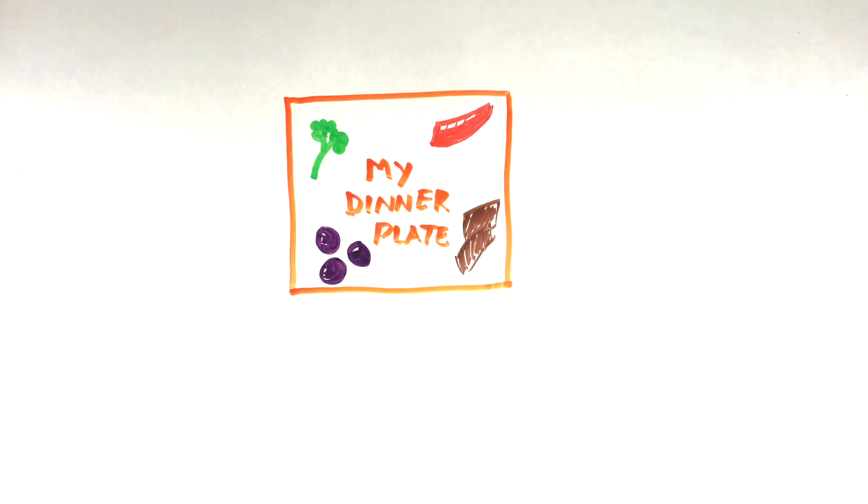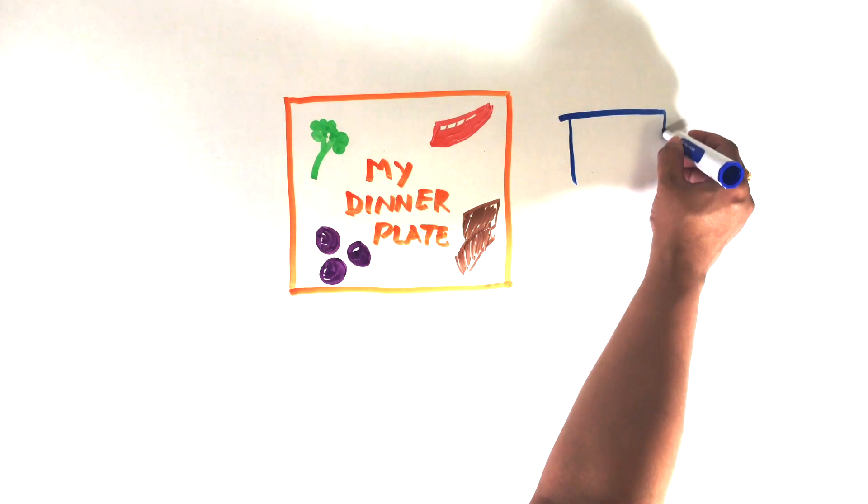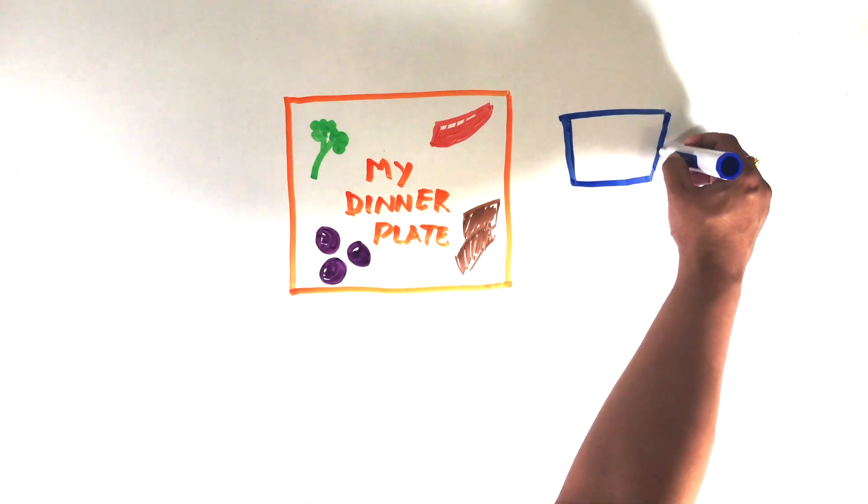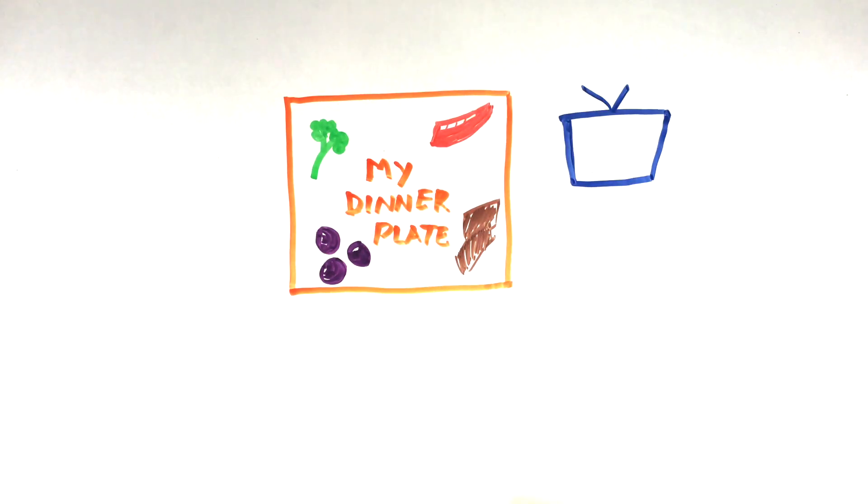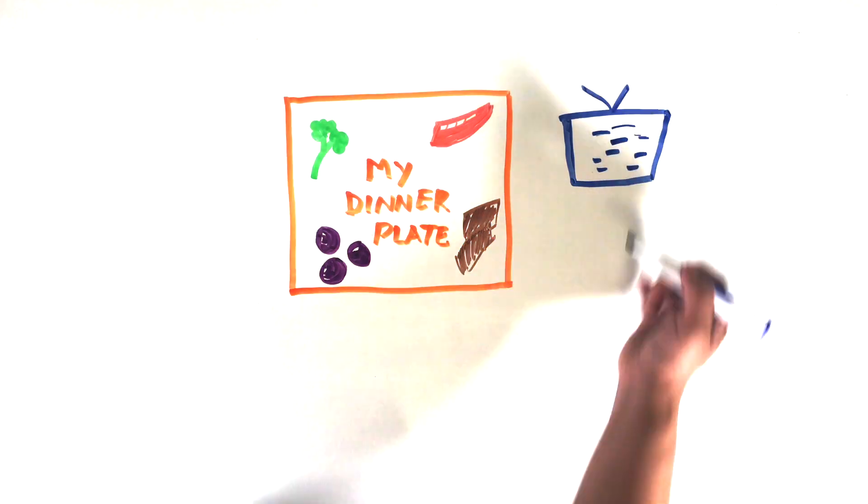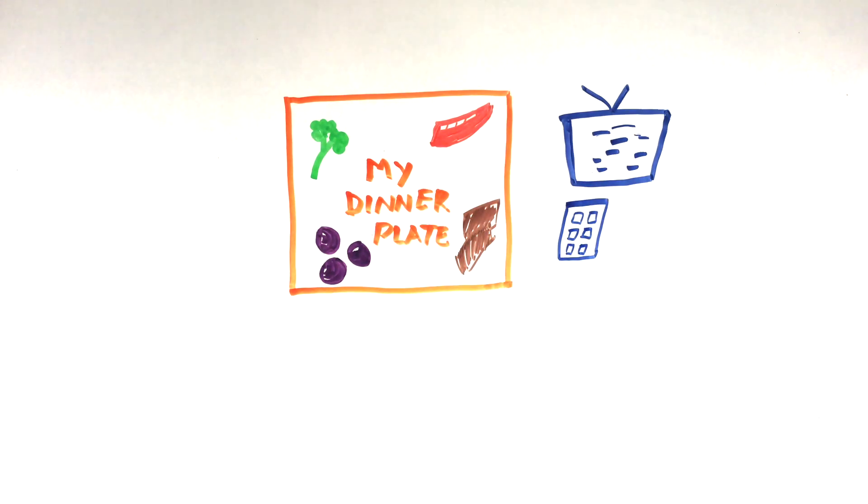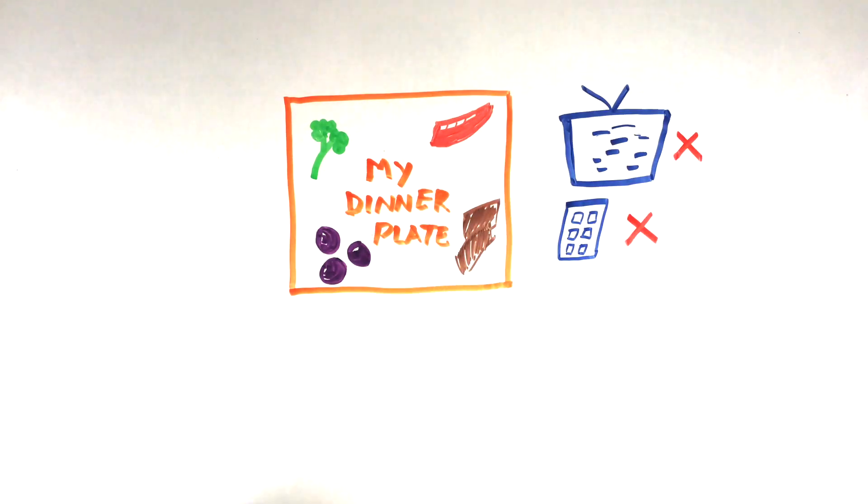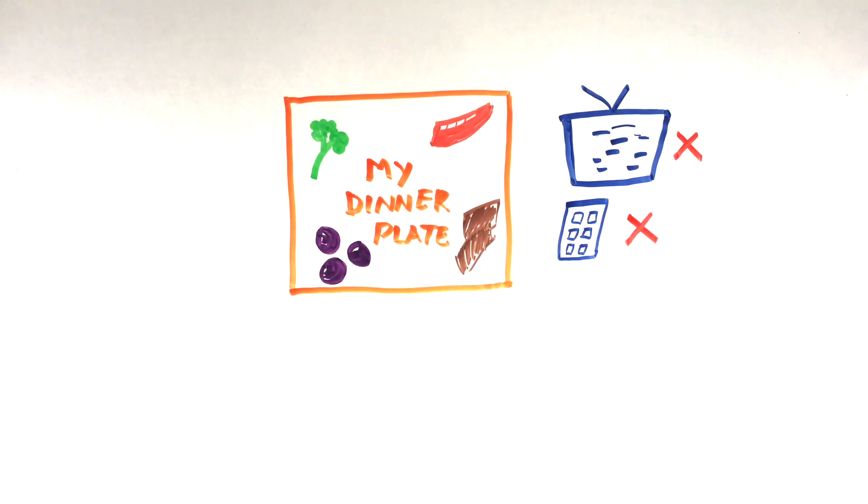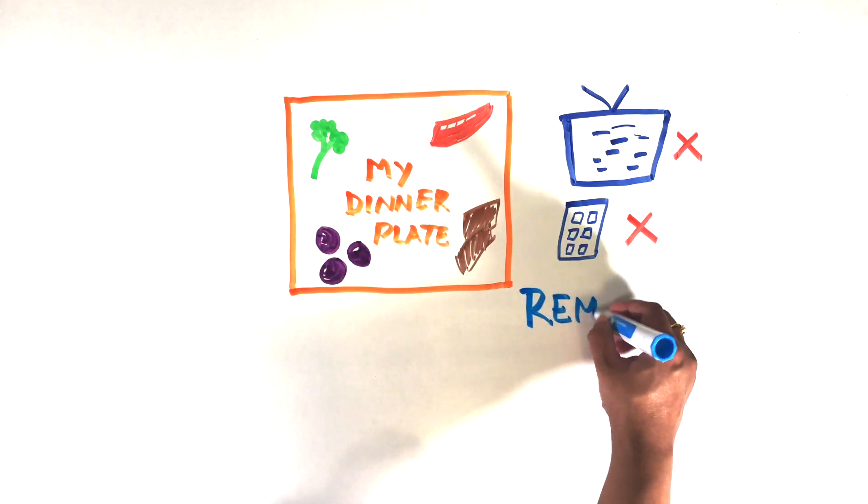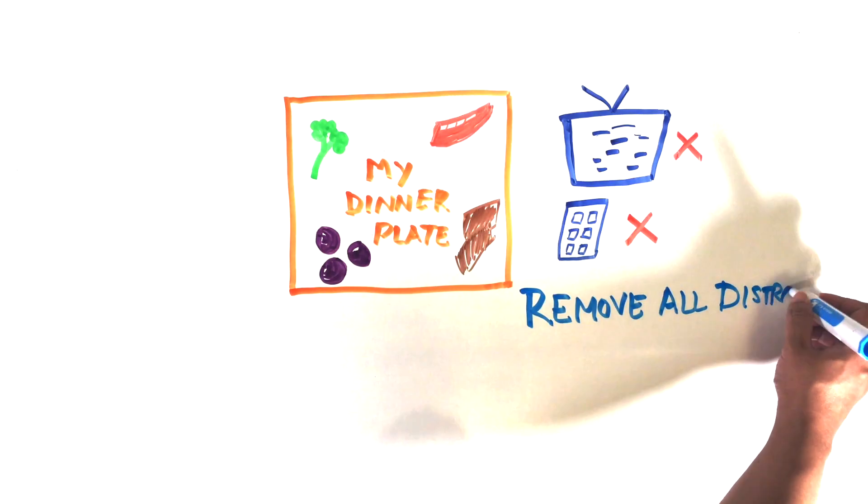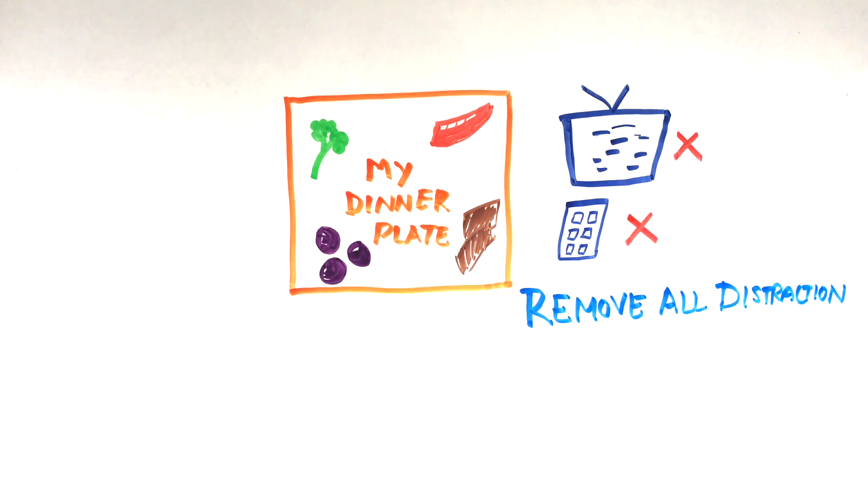Removing distractions like cell phones, iPads, and TV from our dinner table is one of the first things we can take care of. Eating while talking on the phone or watching TV shows is a form of distracted eating, which is the opposite of mindful eating with our mind, body, and soul, and that's when we are not aware of what we are actually ingesting.